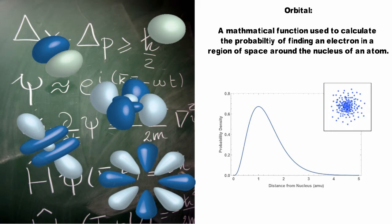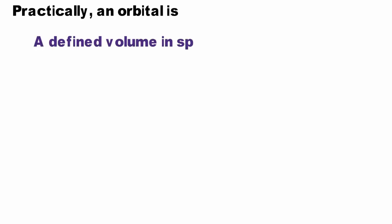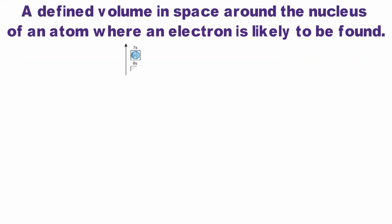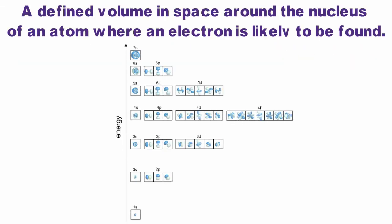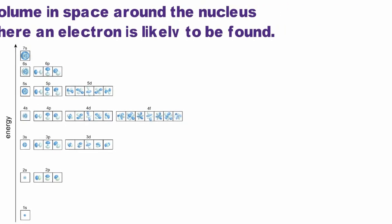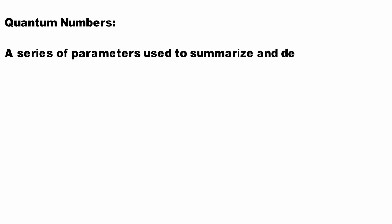We'll try not to get bogged down in the background explanation. For now, understand that an orbital is a defined volume in space around a nucleus where an electron is likely to be found. There are equations that precisely describe the energy and shapes of the orbitals, but practically we can use a series of parameters, known as quantum numbers, to summarize and describe our orbitals.